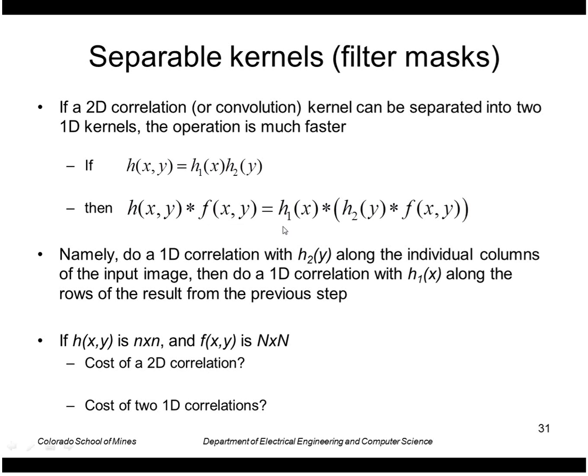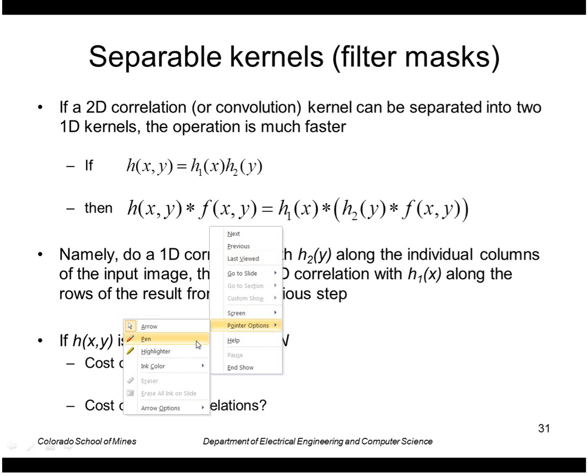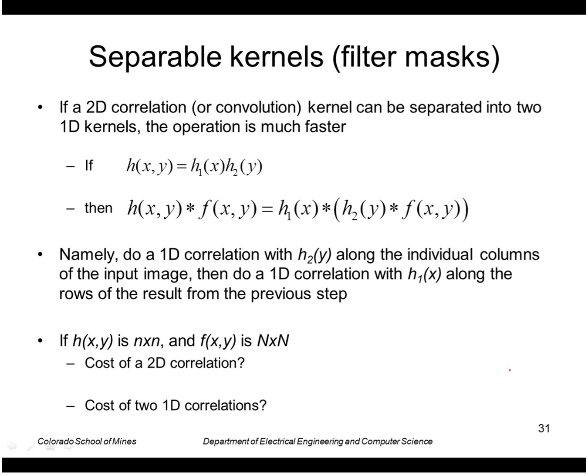Why is this better? Looking at the cost for a filter and an image, we have an image which is n by n and a little filter of little n by little n. For a 2D convolution or correlation, we have n squared operations at every pixel and there are capital N squared pixels. That's the order of that operation for the entire image.